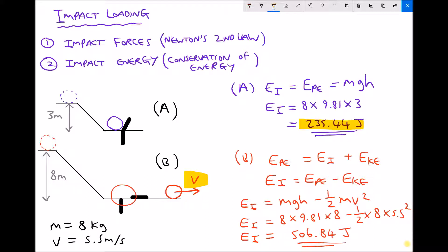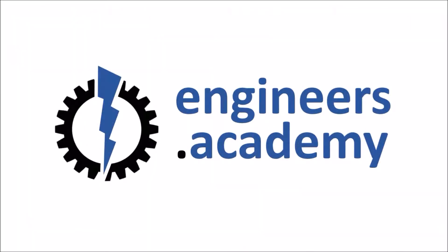So we did a simple energy balance. We said that the impact energy was the potential energy minus the kinetic energy that remained, and we calculated the impact energy to be 506.84 joules, and that's the amount of impact energy that was required to rupture our test piece. We can see there that it's roughly twice the amount of energy absorbed during the first test, and so we've accurately established the amount of impact energy that test piece was capable of withstanding.